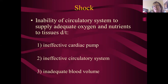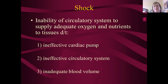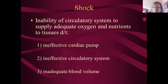That inadequate blood volume typically happens in trauma or some hemorrhagic process. To summarize those three things: first, the heart is not able to pump oxygen and nutrition around. Second, the heart is able to pump but the circulatory system has collapsed — the heart is trying to pump blood but the blood vessels collapse. Third, the actual blood volume is inadequate. In all three situations, the end result is we don't get enough oxygen and nutrition to our target organs.